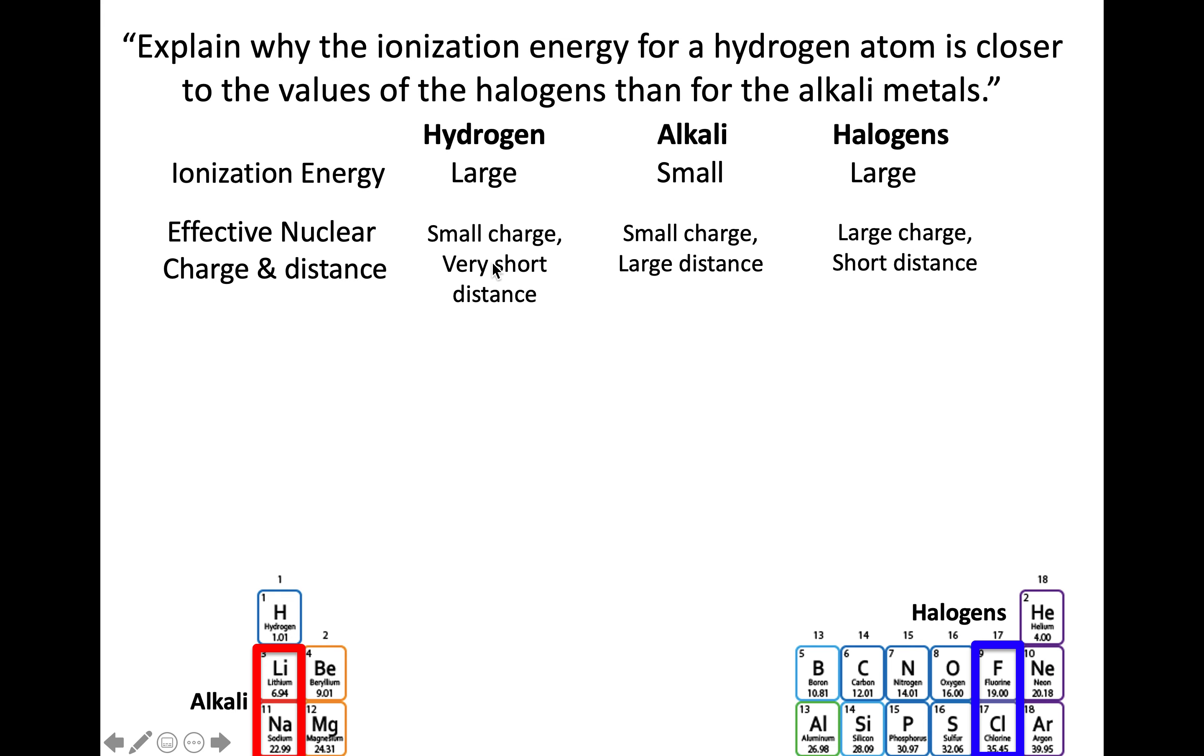With hydrogen, small charge—just one proton—but very short distance, with the electron found quite close to the nucleus. The halogens have a very large effective nuclear charge. There's a contraction moving left to right across the periodic table due to that larger effective nuclear charge, giving rise to higher ionization energy. The alkalis have small effective nuclear charge and larger distance as we populate a larger principal quantum number. This is a complex question because there's no simple explanation. It's the same factors of charge and distance, but we're reaching those differently for hydrogen versus halogens.